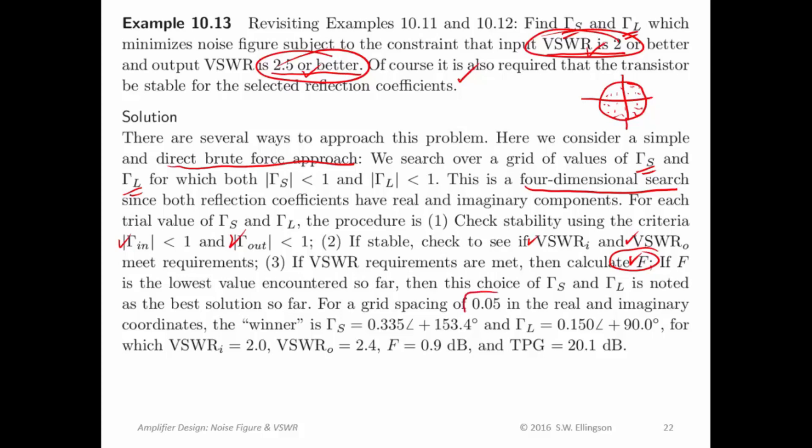When I did this, I used a grid spacing of 0.05 in both the real and imaginary coordinates. And what I found was the best value of gamma sub S was this. The best value of gamma sub L was this. That gave me an input VSWR of 2.0, an output VSWR of 2.4, which meets the requirements.